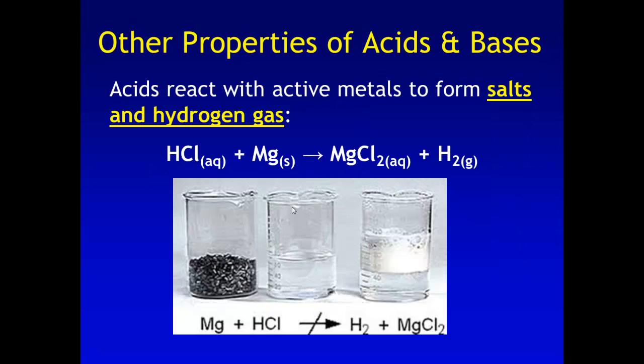One property of acids is they react with active metals to form salts and a hydrogen gas. So here's my acid, my hydrochloric acid. I've got my metal, magnesium right here. Here's my hydrogen gas being given off. And then again, my salt is just a generic metal with a nonmetal. So in this picture here, they've got magnesium. They've got the hydrochloric acid. And then down here is the magnesium chloride. And then up here are my hydrogen gas bubbles being produced.